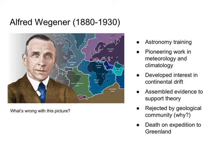All Wegener proposed was: I have evidence that the continents as we see them today were not always in the place they were. He assembled all this evidence, but ultimately he was rejected by the geological community of his time — his ideas were not accepted, except by a handful of practicing geologists. We can talk about some of the reasons why.